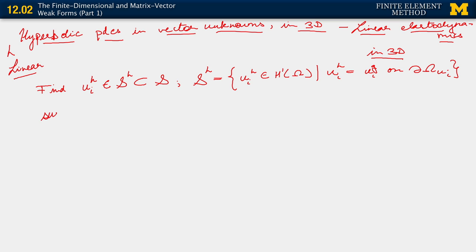Such that for all w_i^h belonging to V^h, which is a subset of V, where V^h consists of weighting functions w_i^h also in H^1, such that w_i^h vanishes on that corresponding Dirichlet boundary.